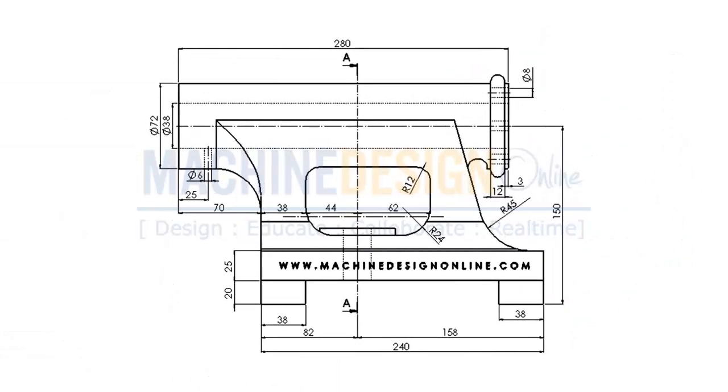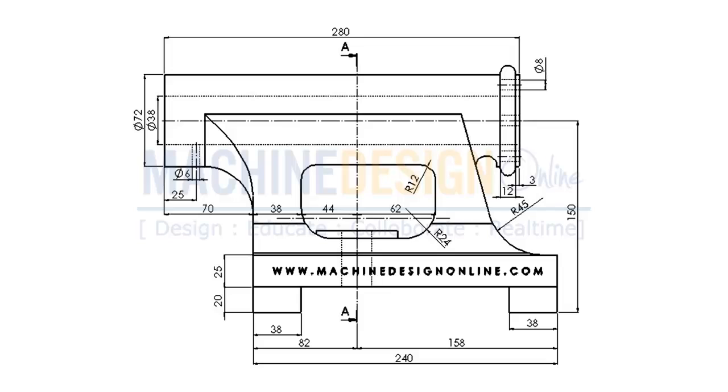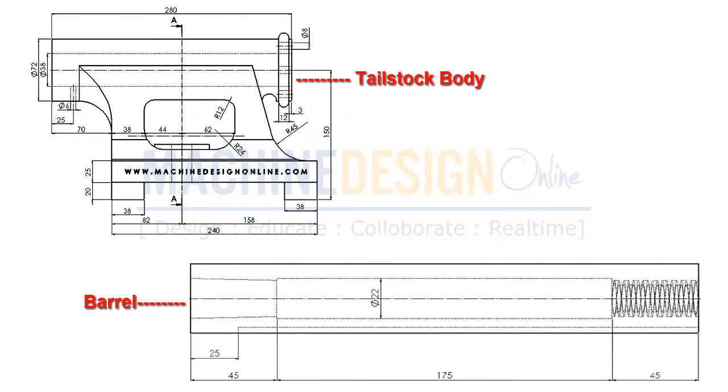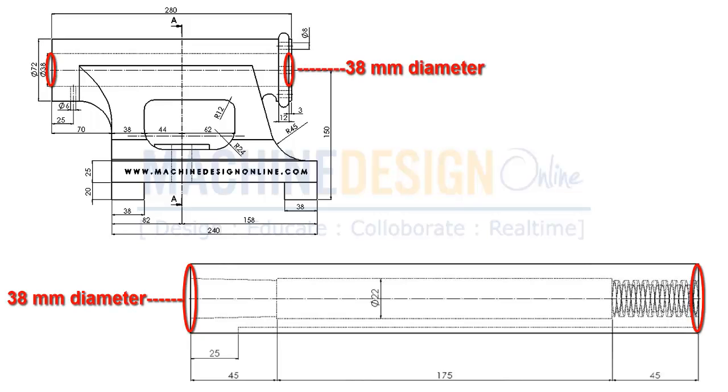Let's understand other parts of assembly and imagine isometric view of all. Now check the dimensions of barrel and tailstock body. We can see that dimension 38mm is common in both.